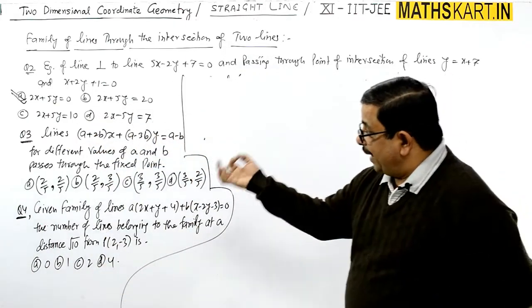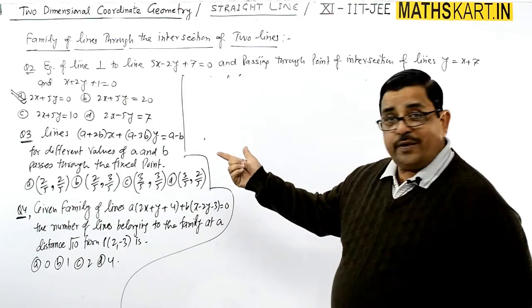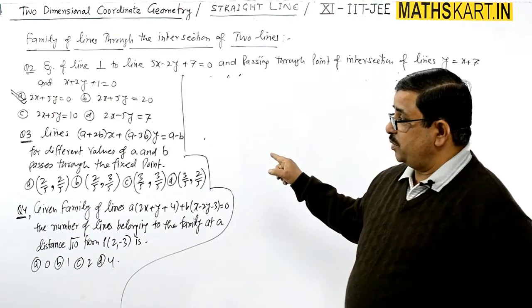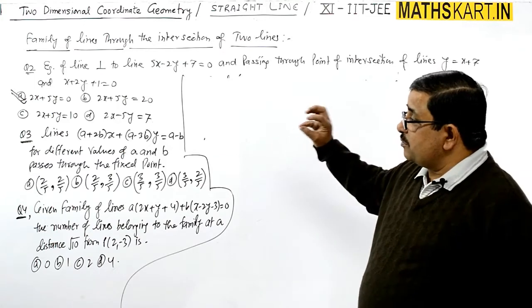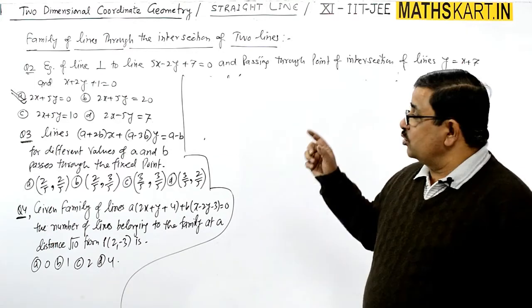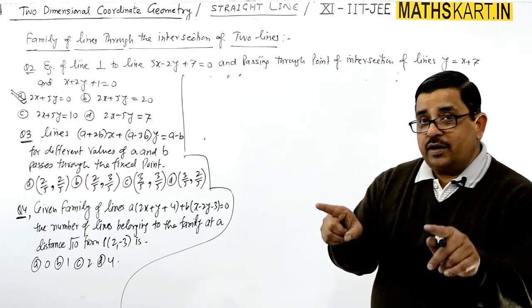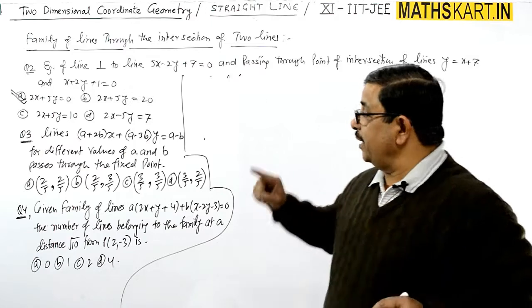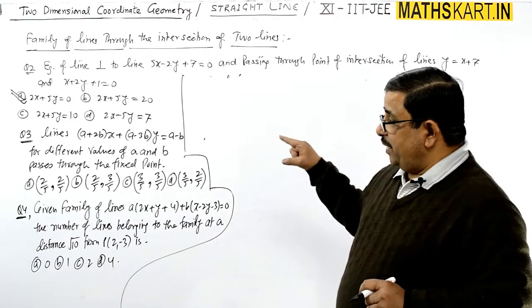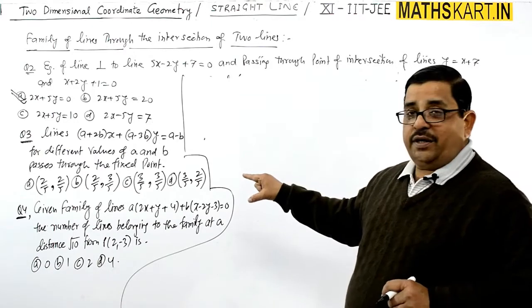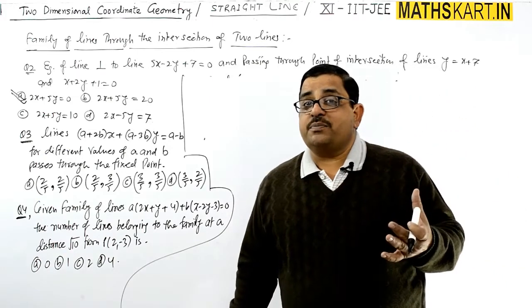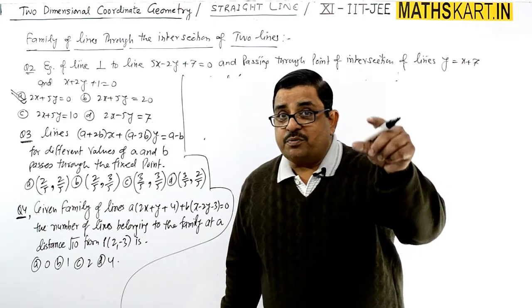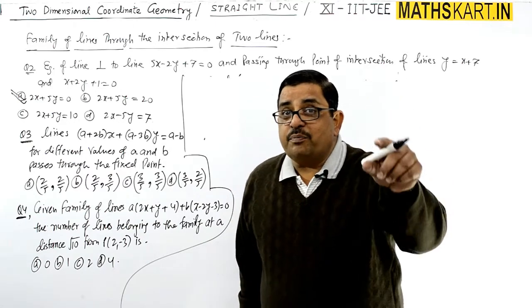Question number three: The lines (a+2b)x + (a-3b)y = a-b. If we write this in another format, we will know that this linear combination or family of lines for different values of a and b passes through a fixed point. The question is: which fixed point is passed by this family of lines at their intersection point?